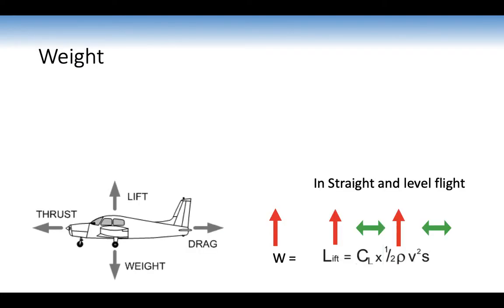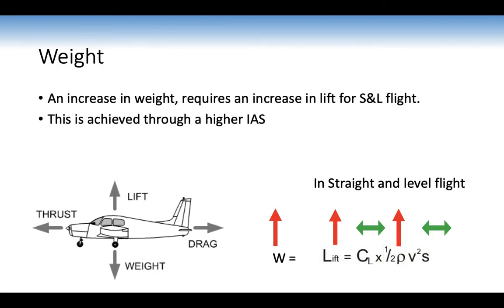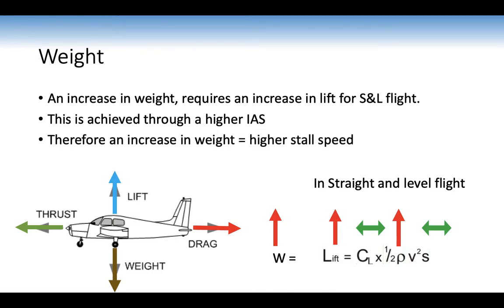An increase in weight means we need to increase lift in order to balance weight. This requires a higher indicated airspeed. When weight increases, if we're already flying at 16 degrees, the only thing we can do is fly faster — increase thrust. Therefore, increasing weight means a higher stall speed. For our aeroplanes the stall speed is already calculated at maximum takeoff weight, so it doesn't affect us that much — but for heavier aeroplanes they have different speeds depending on the weight.